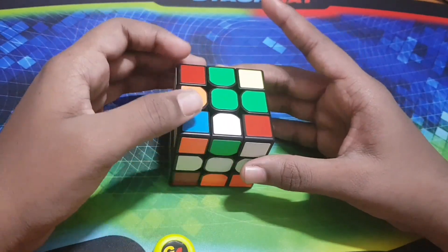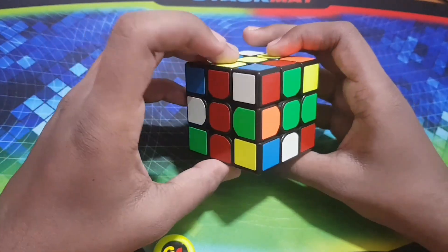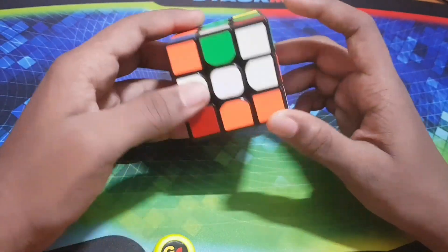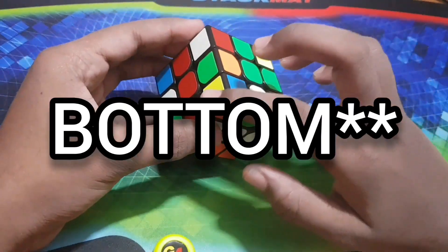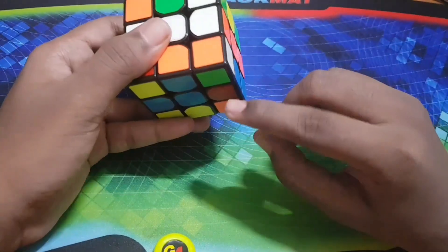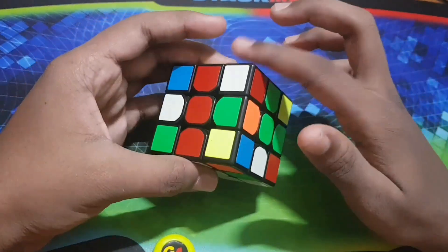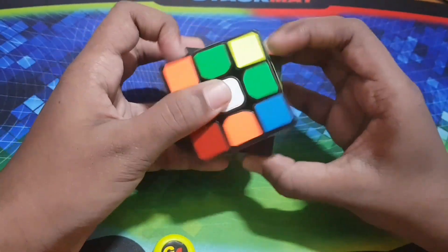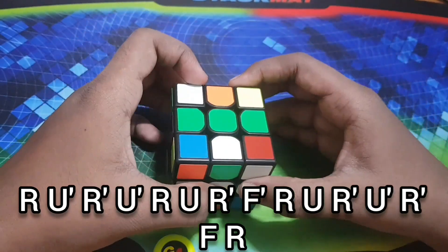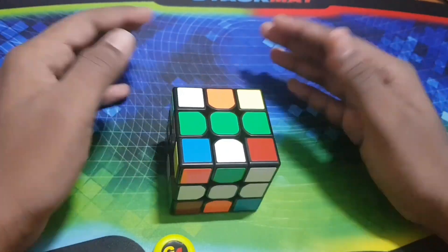Here you can see that this blue needs to come to the down layer and this one needs to come to the down layer. So we can bring this corner to the top by doing that blindfolded algorithm, that is the Y-perm with the F and F prime cut.